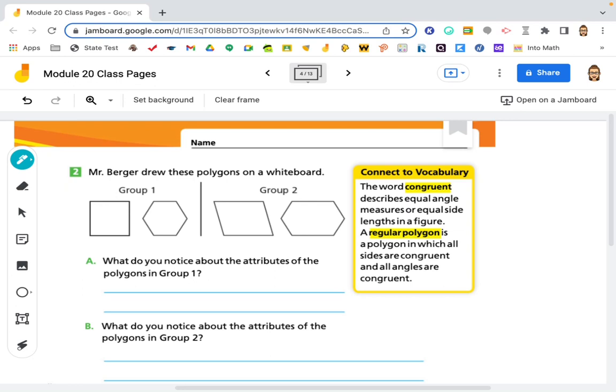So, what do you notice about the attributes of the polygons in group 1? Well, they seem to have side lengths that are the same and angles that are the same.